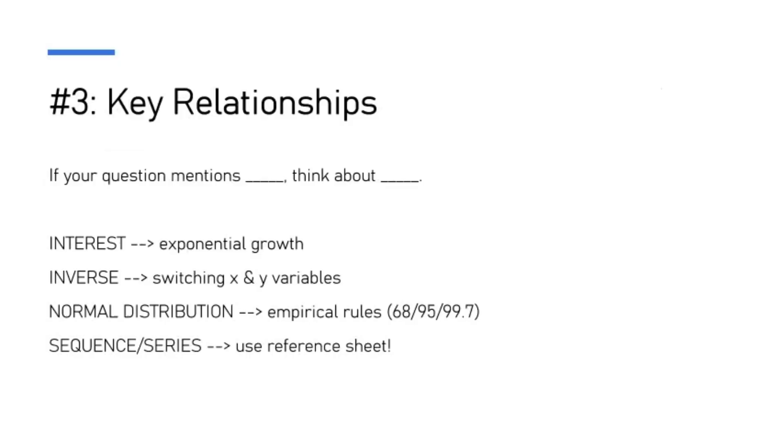Number three is to look for key relationships. Anytime a question mentions anything about interest, think about exponential growth. If it mentions anything about inverse, switch the x and y variables. Normal distributions, think stats, doing your empirical rule. And then anything about sequences and series, those you can primarily solve using those equations in your reference sheet.